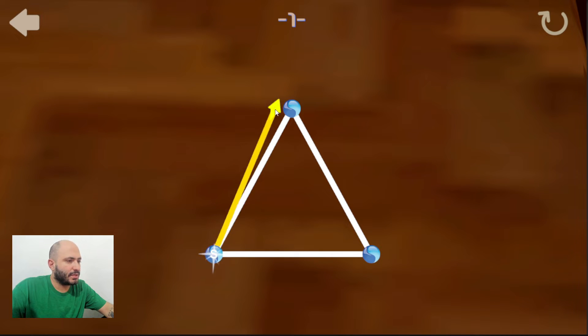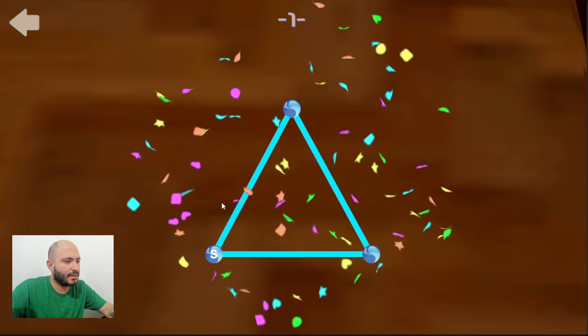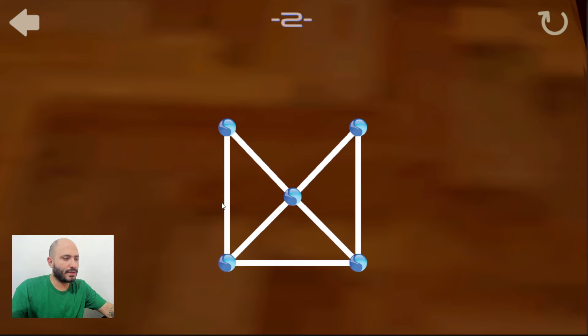What you need to do is to start from any point, any kind of marble that you see here, and then trace the whole figure without going back through a path that you already went through. So in this case if I do this I cannot go down and then this side again because I already went that way.